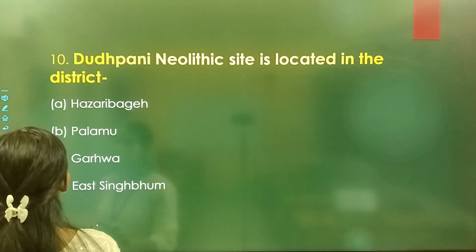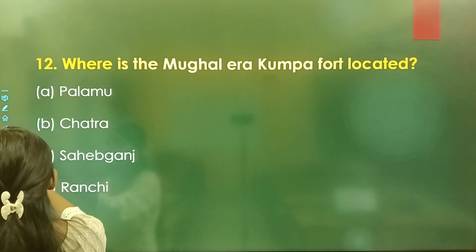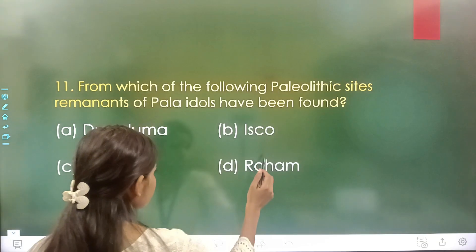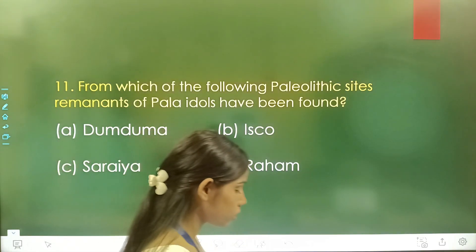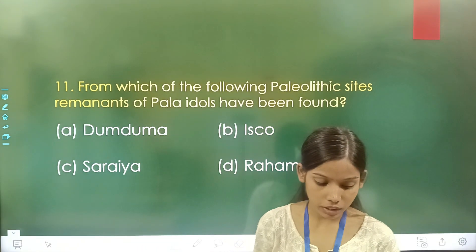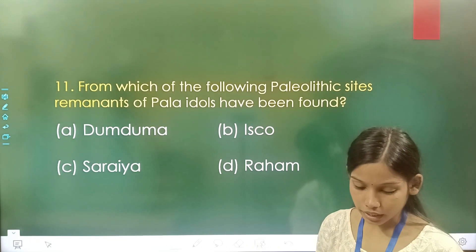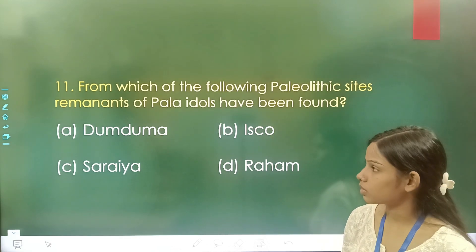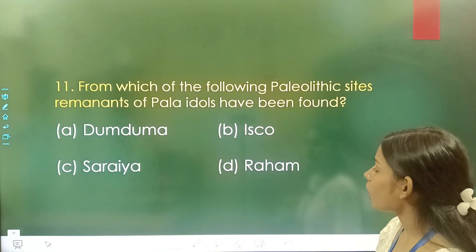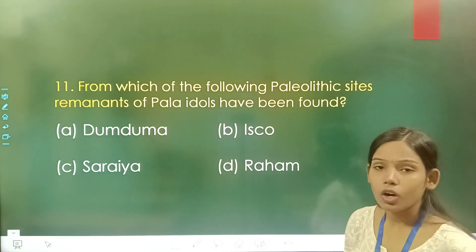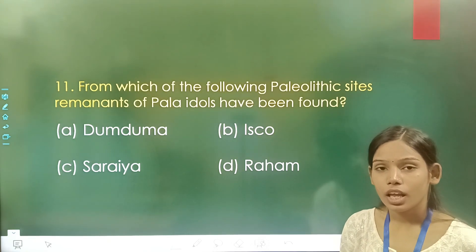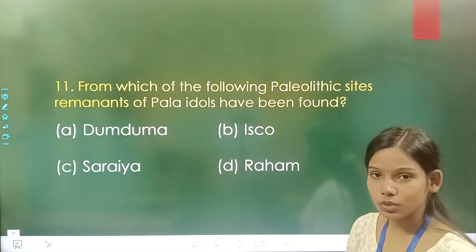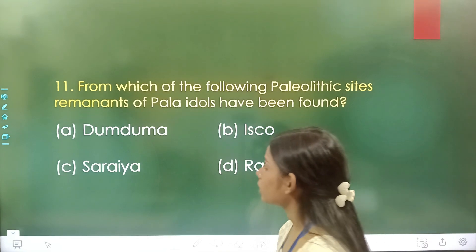Question number 11: From which of the following Paleolithic sites have remnants of Pala idols been found? Option A is Dumduma, option B is Isko, option C is Saraiya, and option D is Rahan. The correct answer is option A, Dumduma.